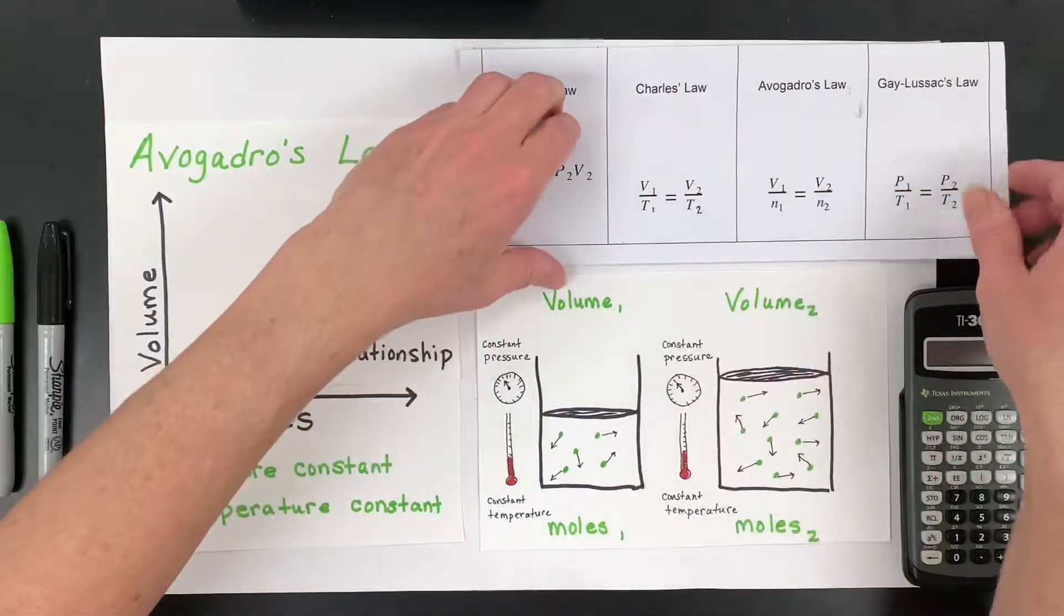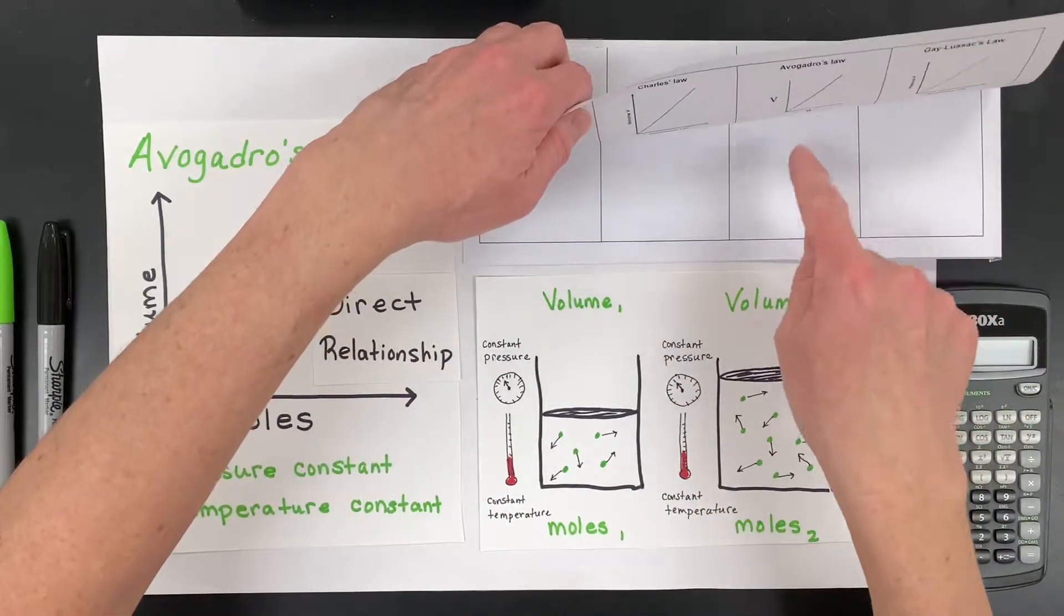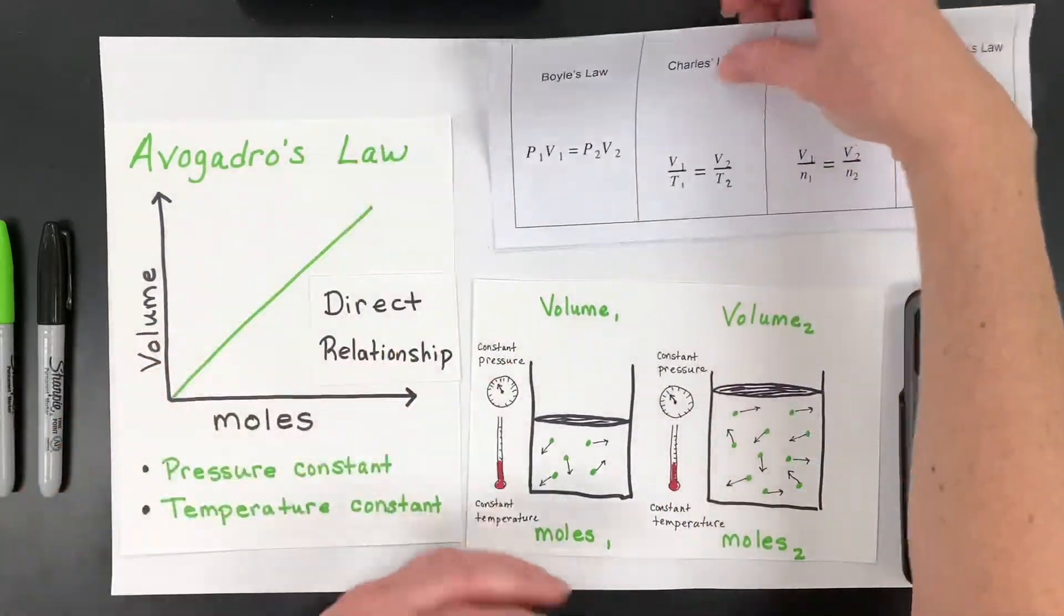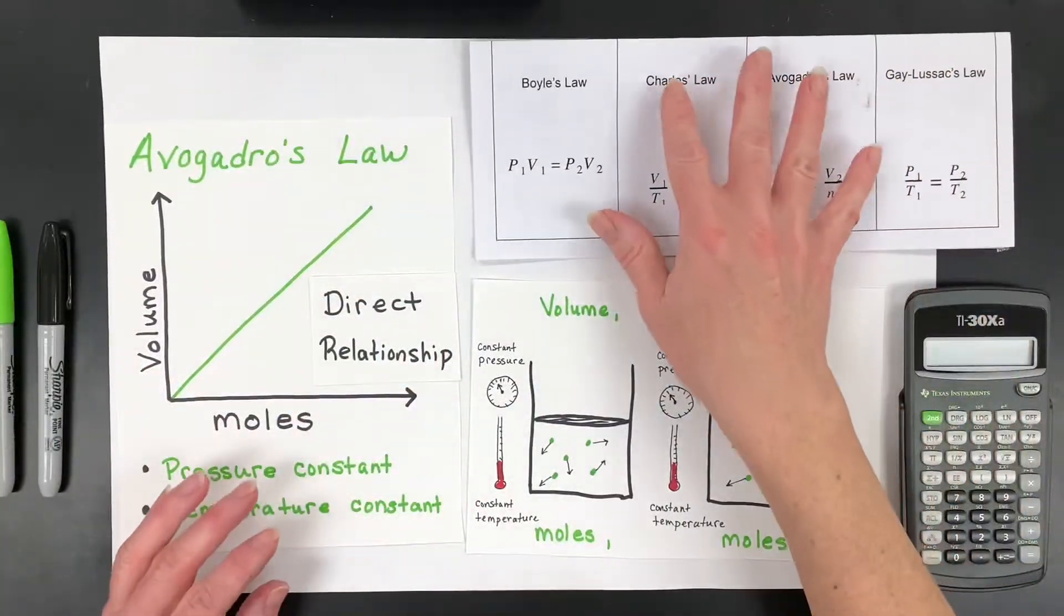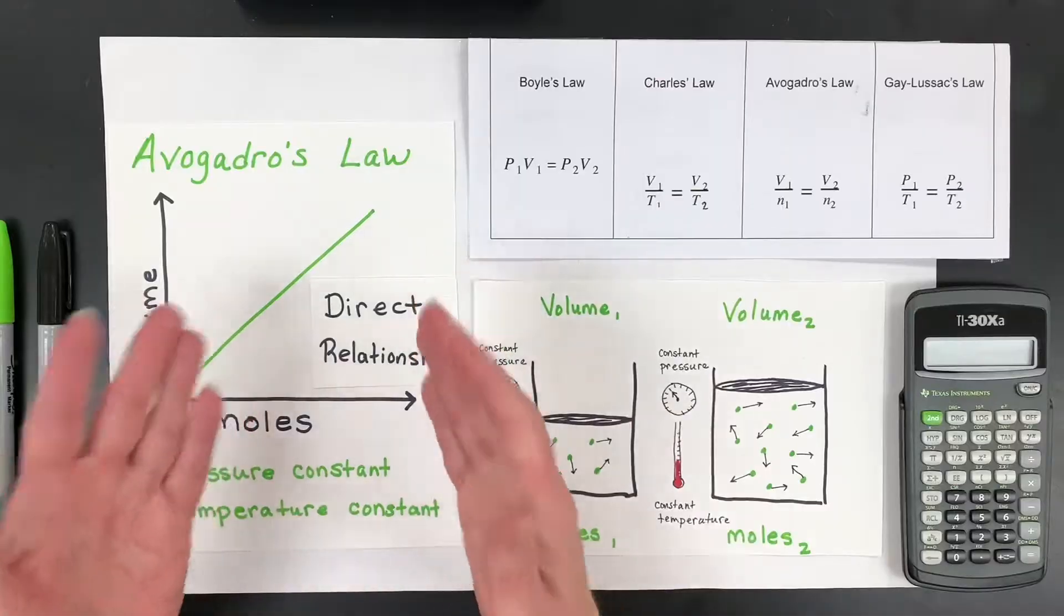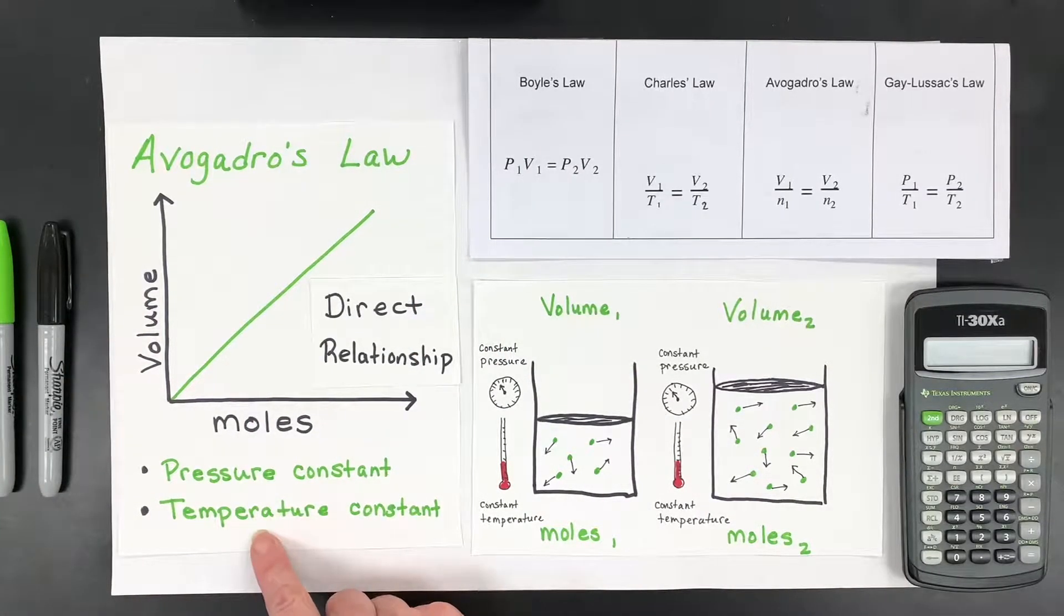This set of notes is in the description below. These two images I have right here on the underside, and then you can put your sample problems there. And then again, on the back, you have some helpful things that I have for you there. So what is Avogadro's Law all about? Well, it's when you keep pressure constant and temperature constant, and you let the moles and the volume vary.